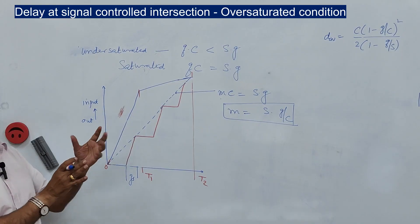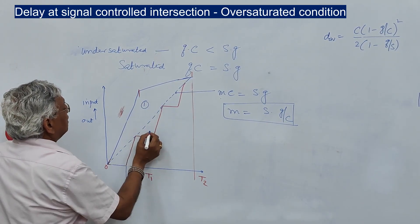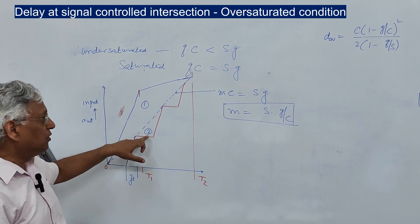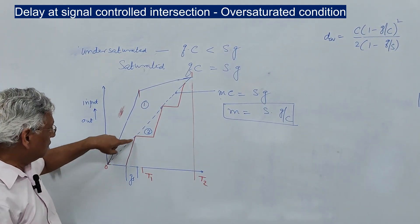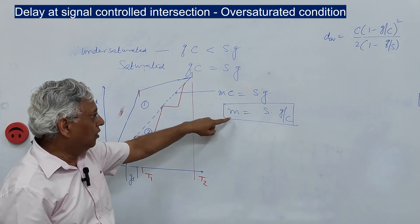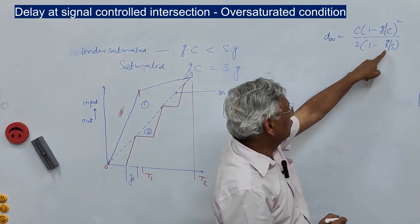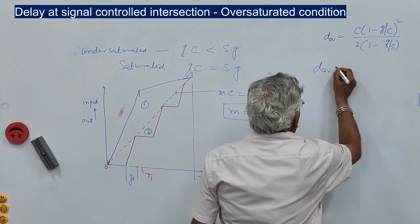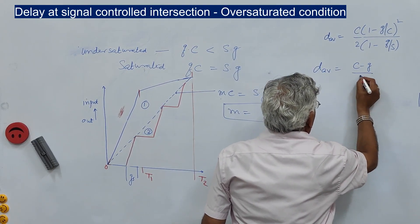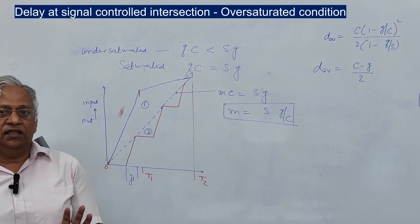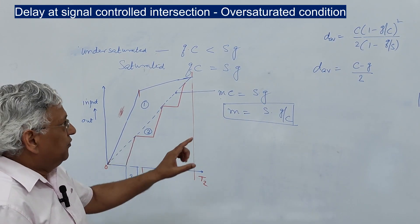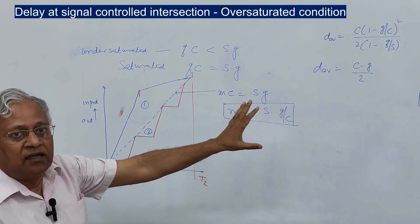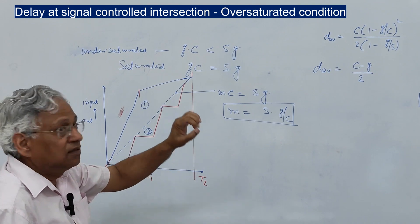We can now consider two areas: Area 1 (from the over-saturation triangle) and Area 2 (from the saturated cycle). If we substitute Q = M (the saturated flow) into the delay equation, the average delay simplifies to (C − G)/2, which is half of the red time — the average delay due to a saturated cycle.